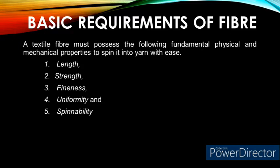Length: it should have sufficient length to convert it into a yarn. Strength: it should have good strength to withstand wear and tear during yarn formation. Fineness: it should be fine enough to convert it into a yarn. Uniformity: it should possess proper uniformity throughout the length of the individual fiber and between one fiber and another. Spinability: it should possess adequate spinability to convert the fiber into a yarn. A fibrous component which does not possess any one of these properties cannot be called a textile fiber.